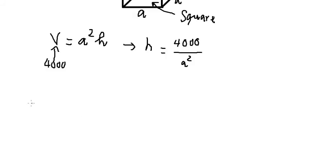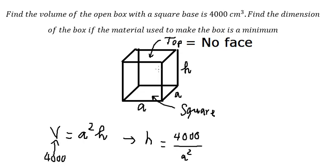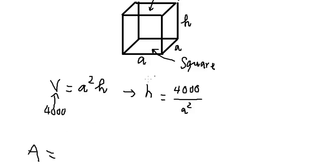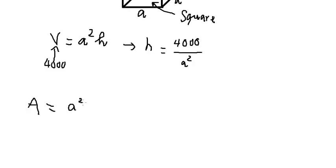Now we go to the area. The area should be the total area of five faces in here. So we get a squared plus 4ah. This is the base, this is the faces. So we get a squared plus 4ah, and we change h for this one.